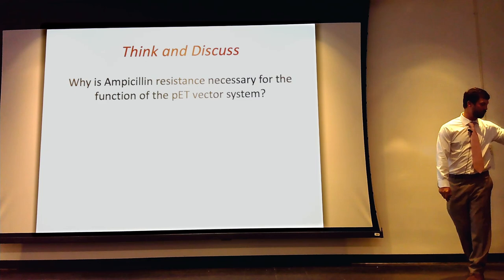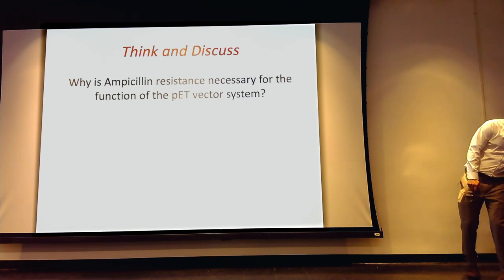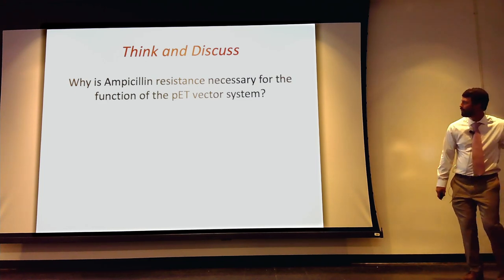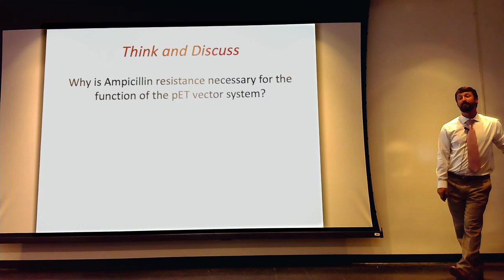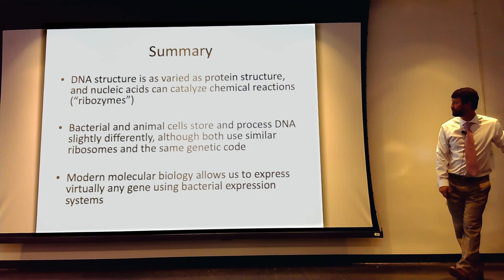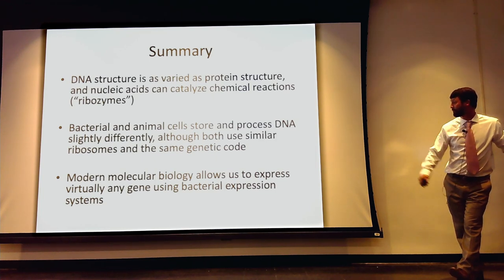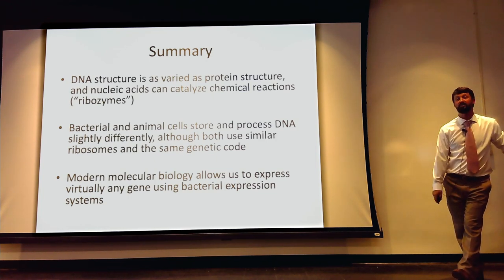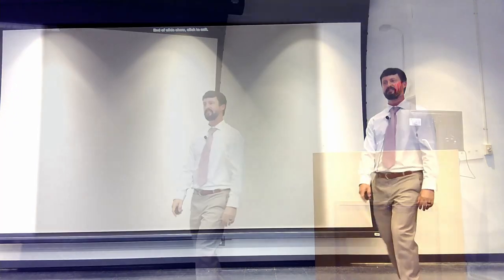We use antibiotics like ampicillin resistance to ensure the bacteria pick up the right plasmid and don't take up unwanted things. In summary: DNA structure, nucleic acids and reactions; we can use recombinant protein expression to make proteins of interest; and molecular biology allows us to make things so we can study them in better detail. Thank you — sorry I ran a few minutes over. Let's take a 10-minute break.